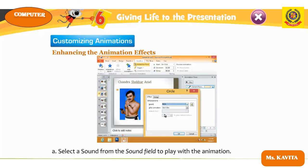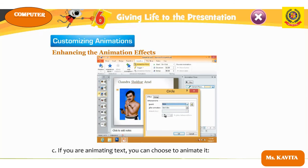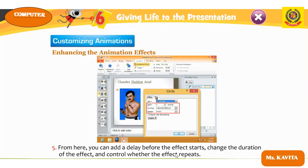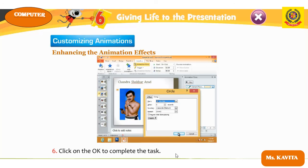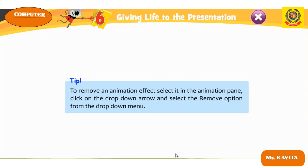To remove an animation effect, select it in the Animation Pane, click the drop-down arrow, and select Remove from the menu. One activity is given at page number 68 related to the above topic — children, you have to complete that.